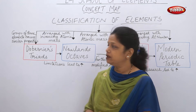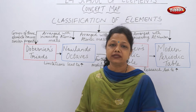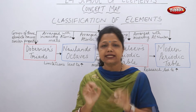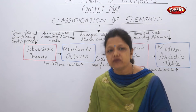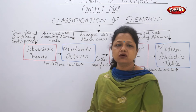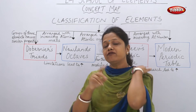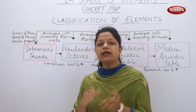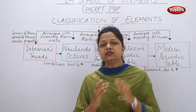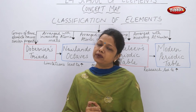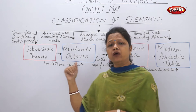Then another scientist, Newland, arranged the 56 elements known at the time in increasing order of atomic weights. He observed that every eighth element had similar properties, so he compared this with musical notes and gave Newland's Law of Octaves — every eighth element had similar physical and chemical properties.